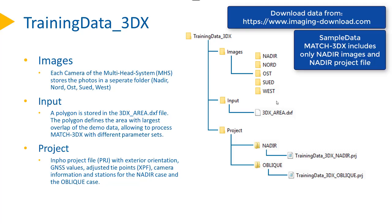The data structure of the demo data contains an images folder with separate subfolders for each camera: the Nadir camera and the cameras looking north, east, south, and west.